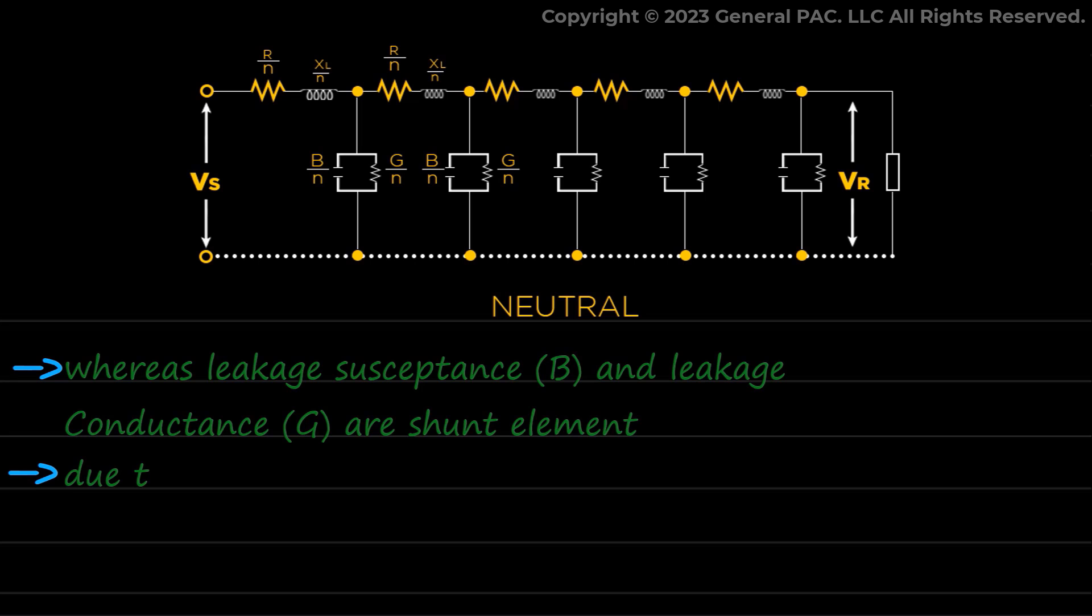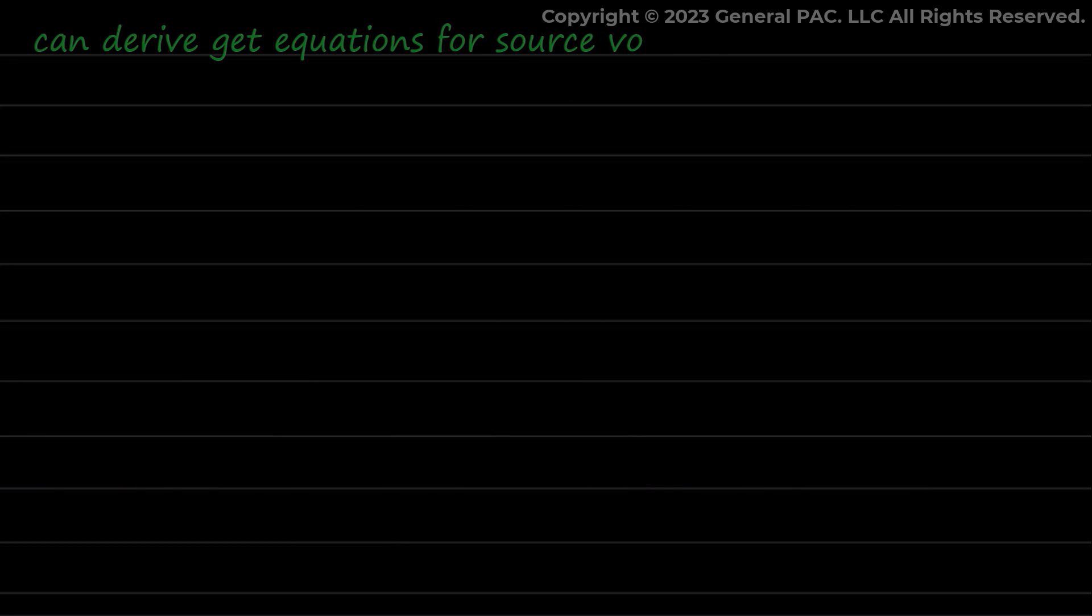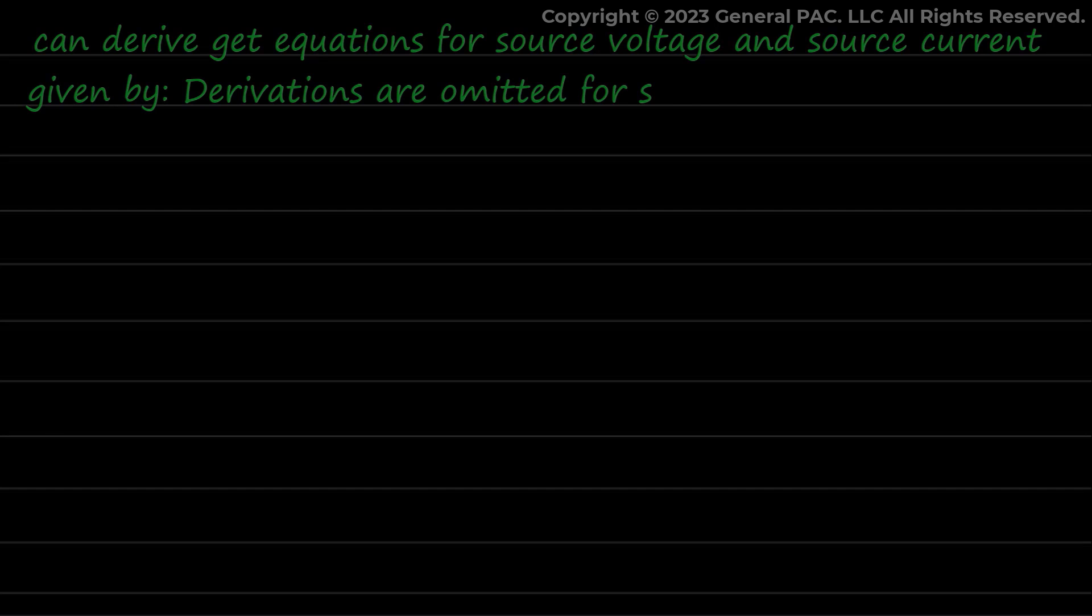All the energy losses due to corona effect are accounted for as the leakage conductance, and the admittance is given by Y = √(G² + B²). By using rigorous method, we can derive equations for source voltage and source current. These are given by (derivations are omitted for simplicity): VS = VR×cosh(√YZ) + IR×√(Z/Y)×sinh(√YZ).